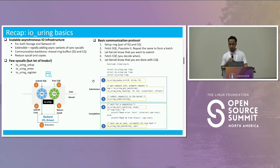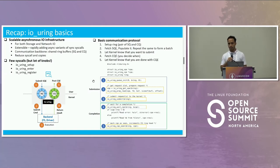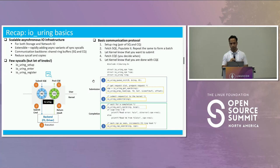Once that is done, you call io_uring_cqe_seen. By this, you're telling io_uring that you're done with this particular CQE and no longer need it. So this is the existing communication protocol, and this is generally for any io_uring operation.